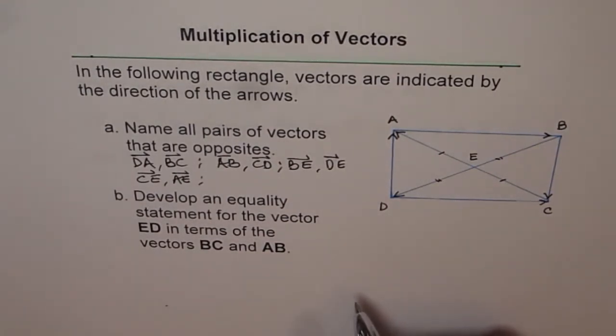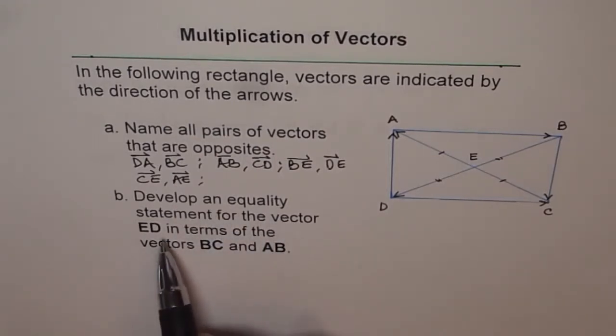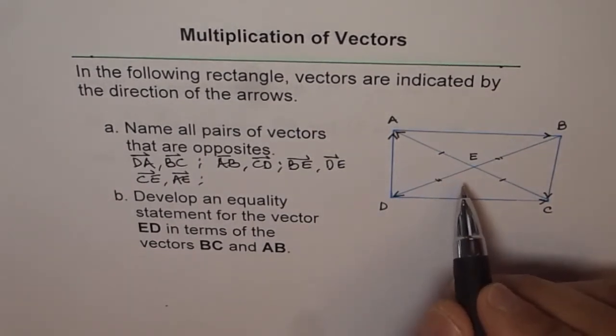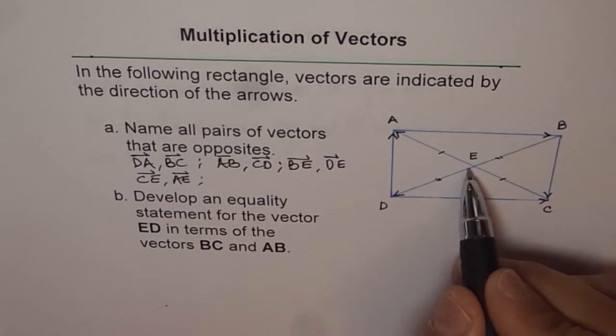Now, part B is kind of tricky. Develop an equality statement for the vector ED in terms of the vectors BC and AB. So, now here E to D is a vector from center to vertex D. This is E to D vector.